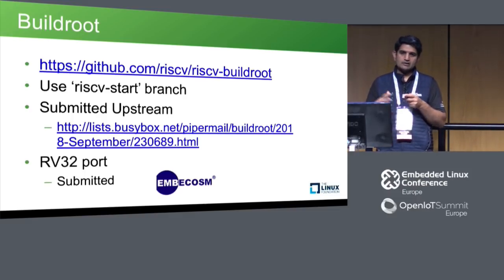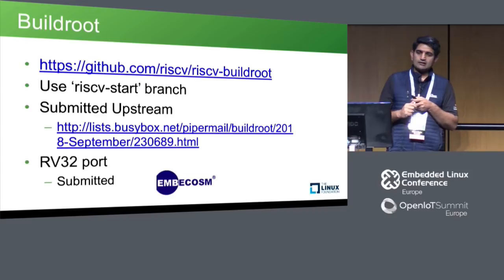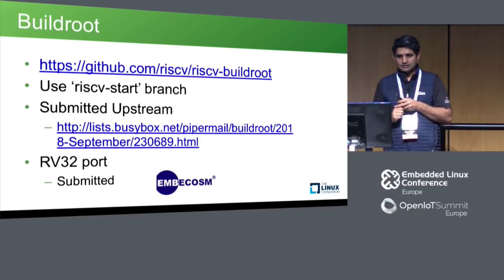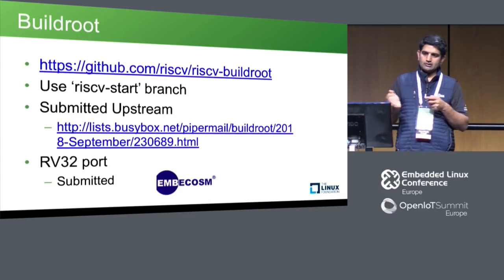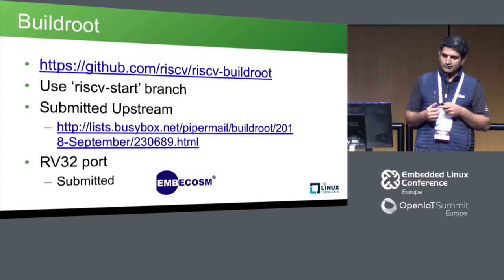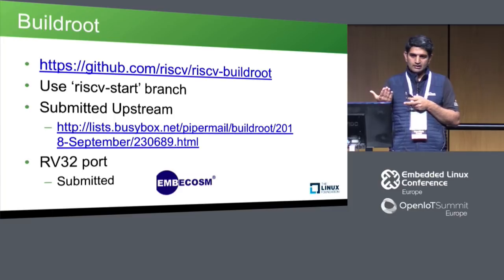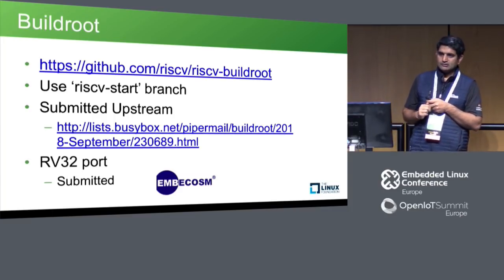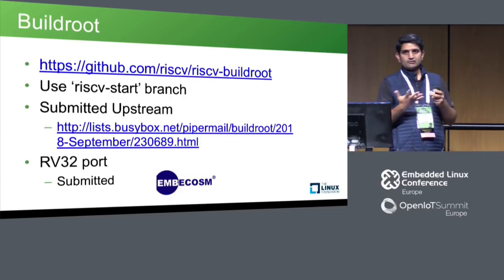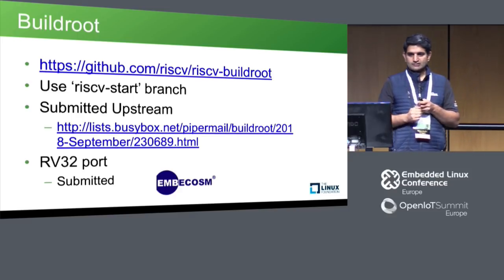Buildroot has done a great job porting changes. Recently the 64-bit port was accepted. The RISC-V start branch on the RISC-V GitHub handle describes how to build Buildroot for the 64-bit emulator. Very recently — yesterday or the day before — the 32-bit port was submitted for Linux to Buildroot, which is great news. There is also an article with a step-by-step procedure for building Buildroot for RISC-V. If you're a Buildroot user, go ahead and try it out and interact on the mailing list if you find issues.